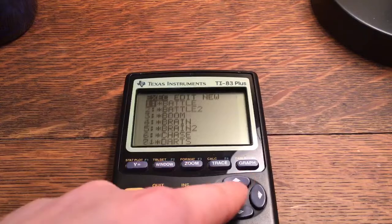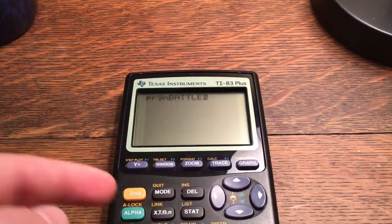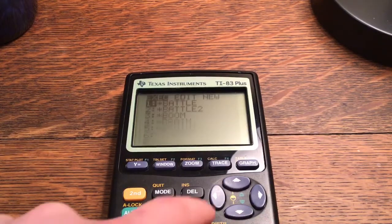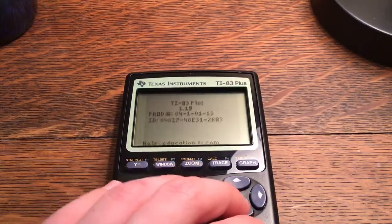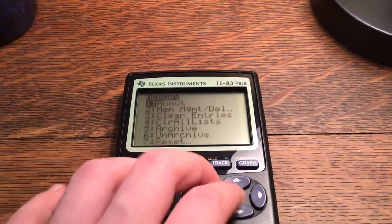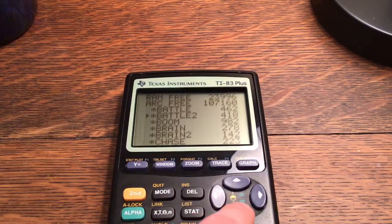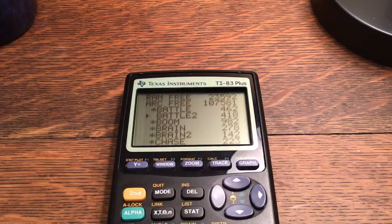Now, if you're going to try to go in and run one of them, it'll say archived. I'm going to go second memory again. I'm going to go to memory management slash delete, all. And then I'm going to unstore the program that I would like to use. You can unstore all of them if you'd like, and then you'll have access to them.